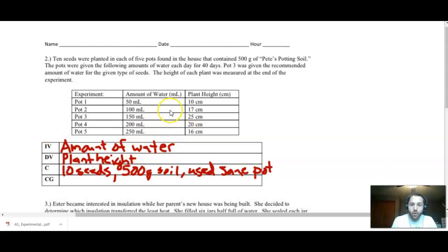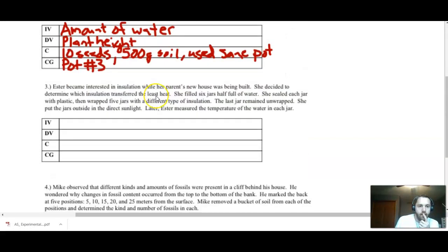And then the control group is a tough one here. But in this case, it says pot three was given the recommended amount of water. Well, that's going to be our control group. That's what we're going to compare to. So control group is going to be pot number three.